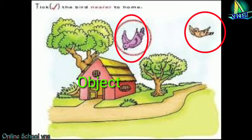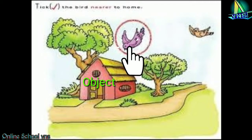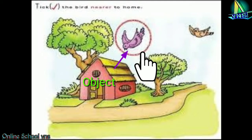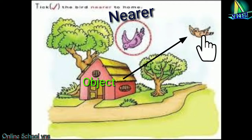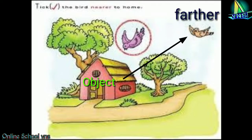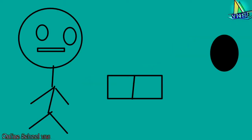Let's suppose that the house is the object and there are two birds flying in the sky. This bird is having less distance in reference to the house, so this is called nearer to the house. And this bird is having more distance in respect to the house, so this is called farther to the house.